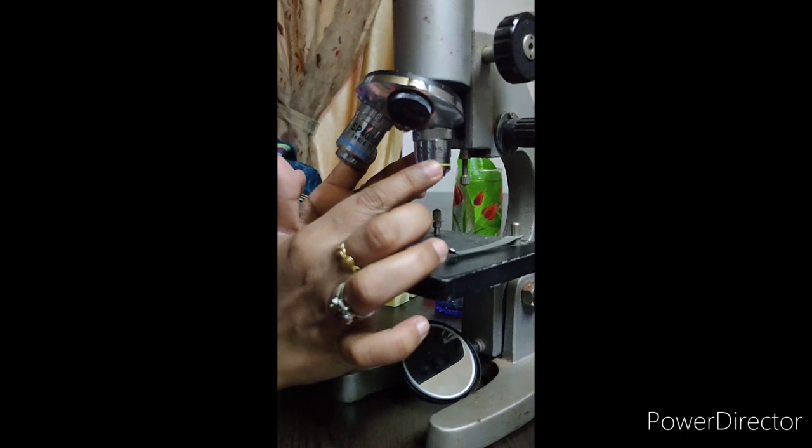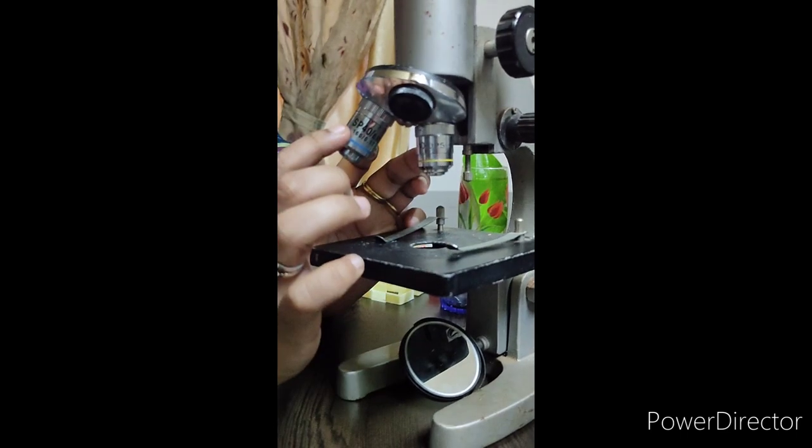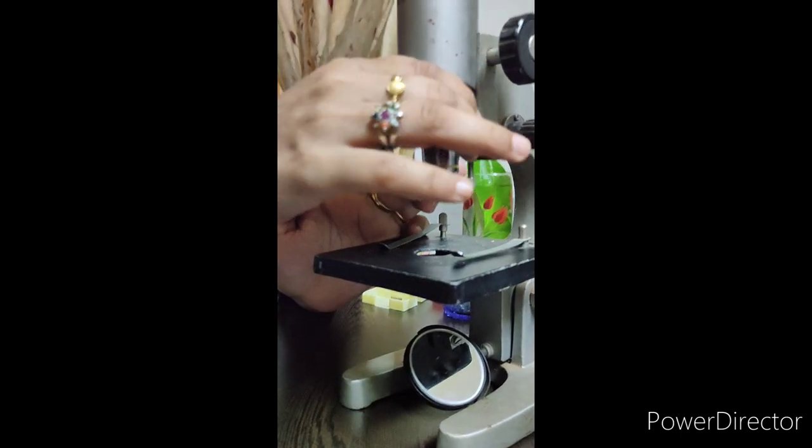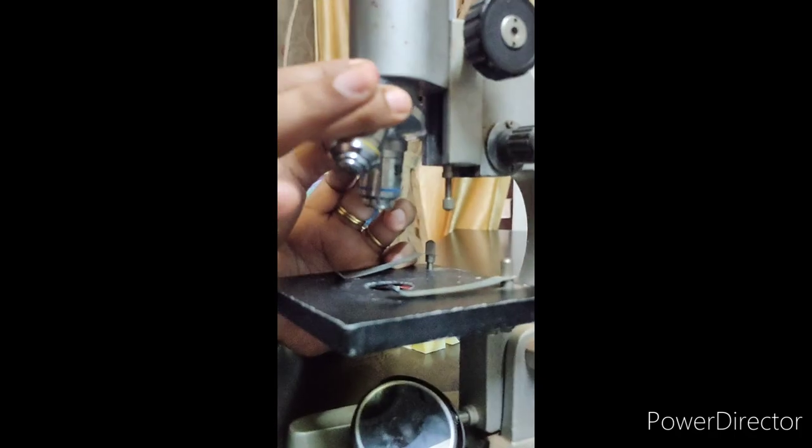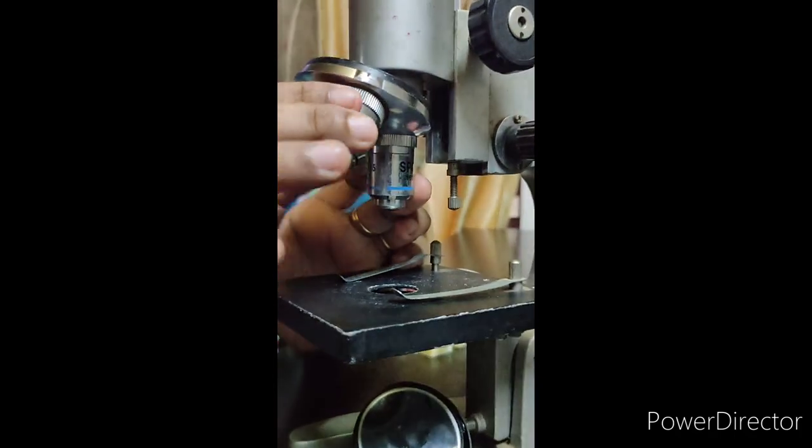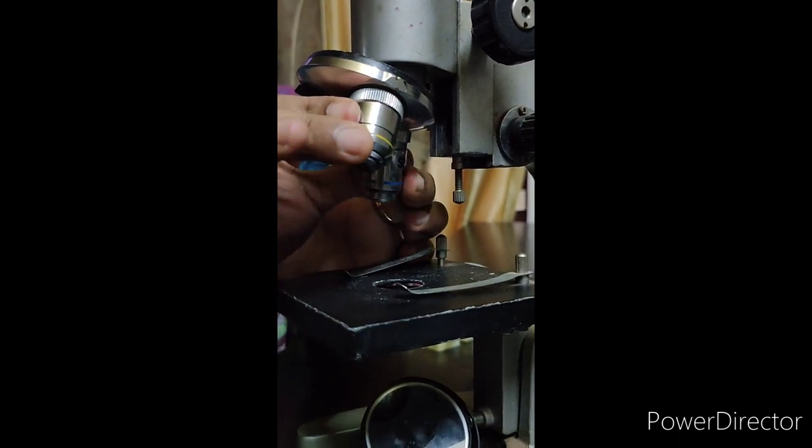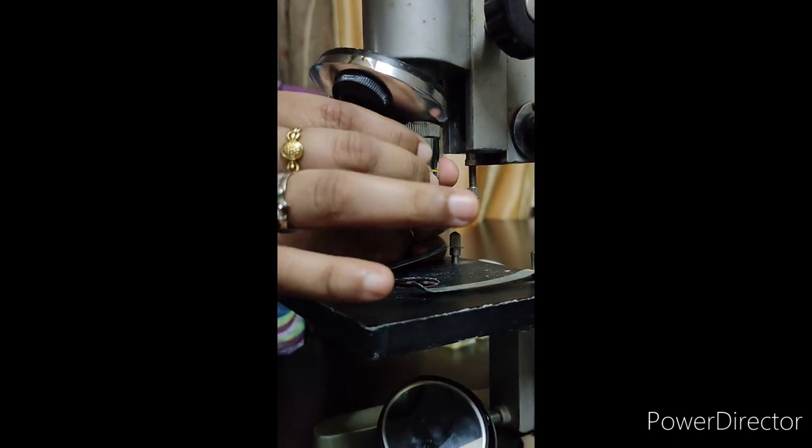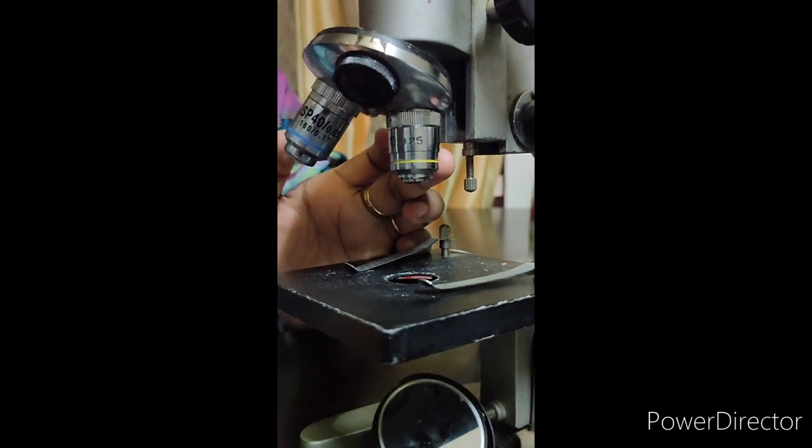We can choose the objective lens that we want to use with the help of the revolving nose piece. See, the revolving nose piece will help us to choose the objective lens that we want for viewing the specimen.